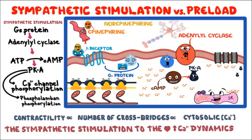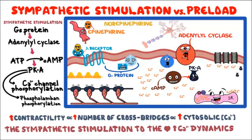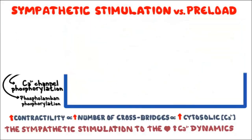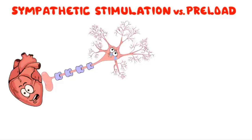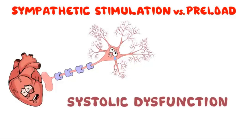To sum it up, sympathetic stimulation causes phosphorylation of sarcolemmal L-type calcium channels and phosphorylation of phospholamban, which speeds up calcium dynamics. Increased intracellular calcium concentration means more cross-bridges cycle and contractility increases. This is referred to as the positive inotropic effect of the sympathetic nervous system on contractile myocardium. If sympathetic stimulation cannot maintain adequate systolic performance of the ventricle, this is referred to as systolic dysfunction.